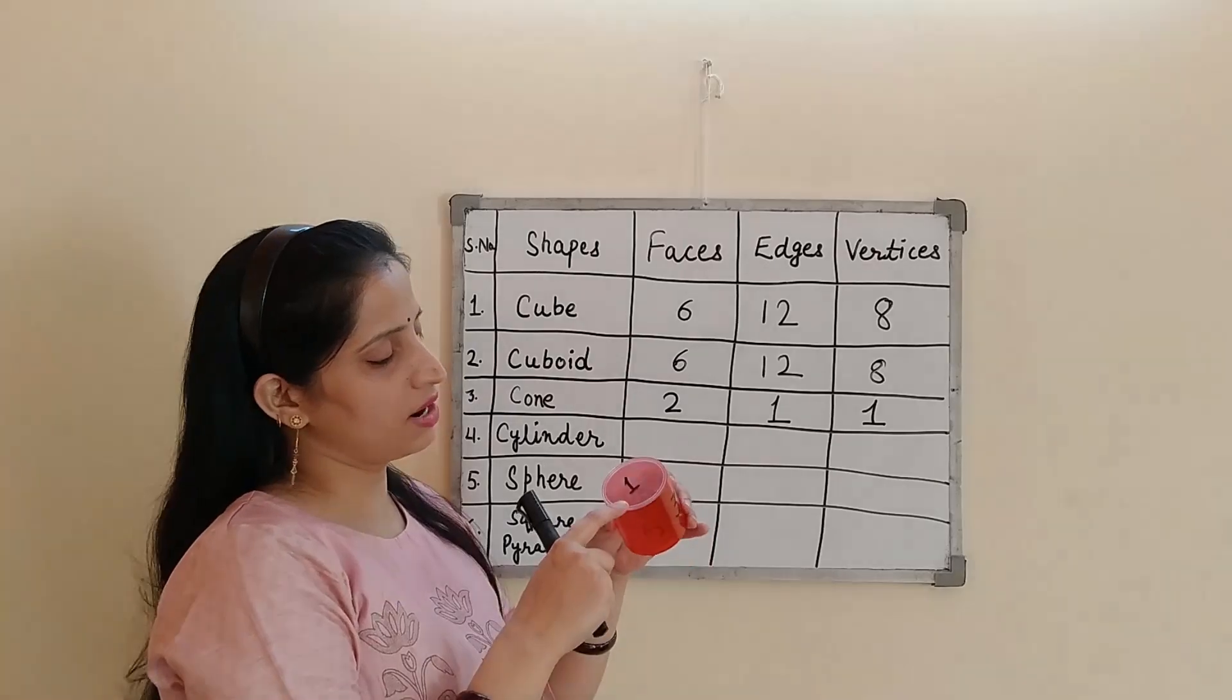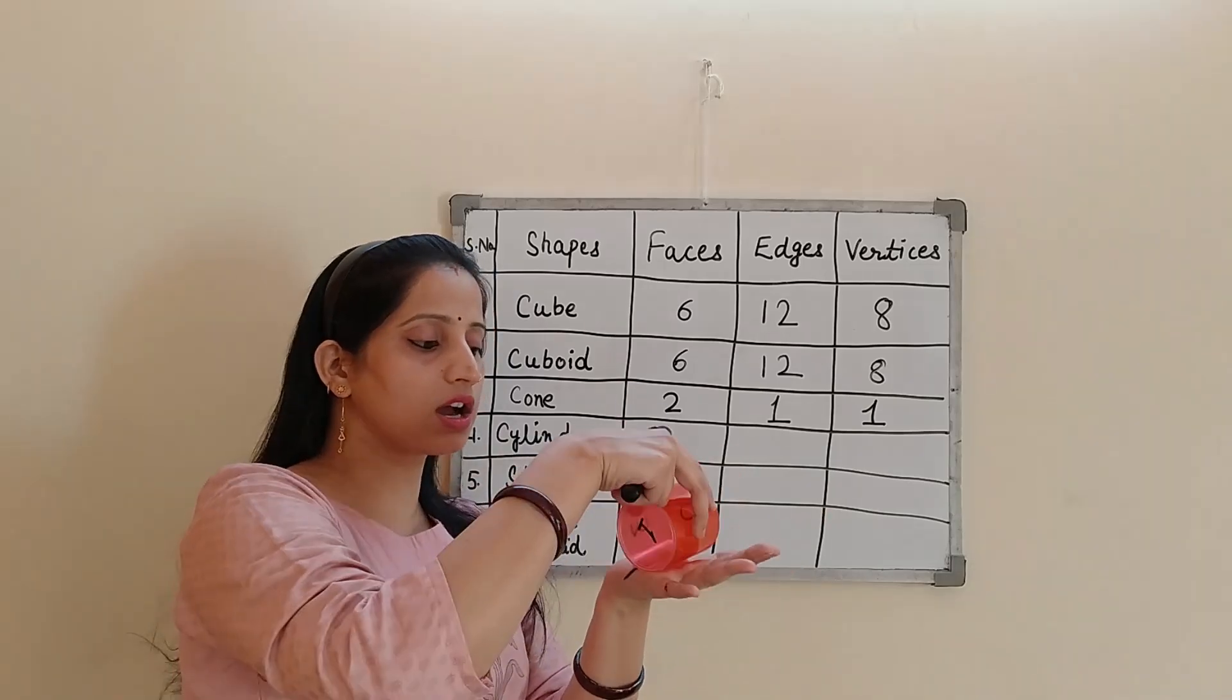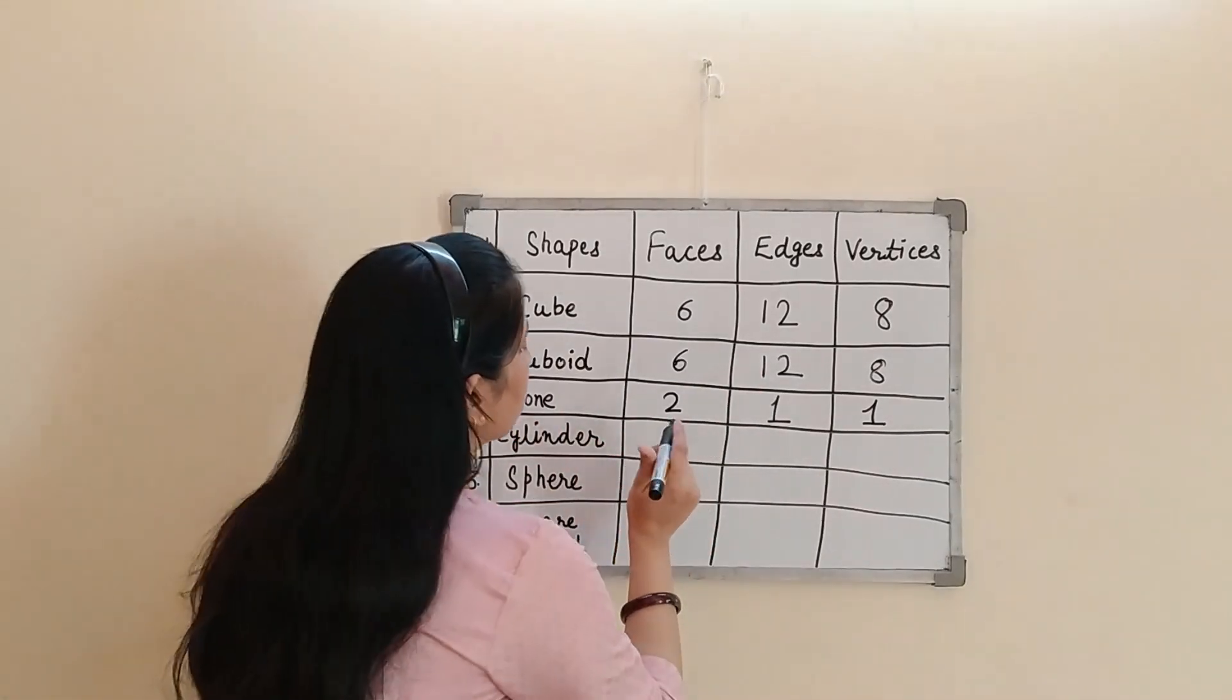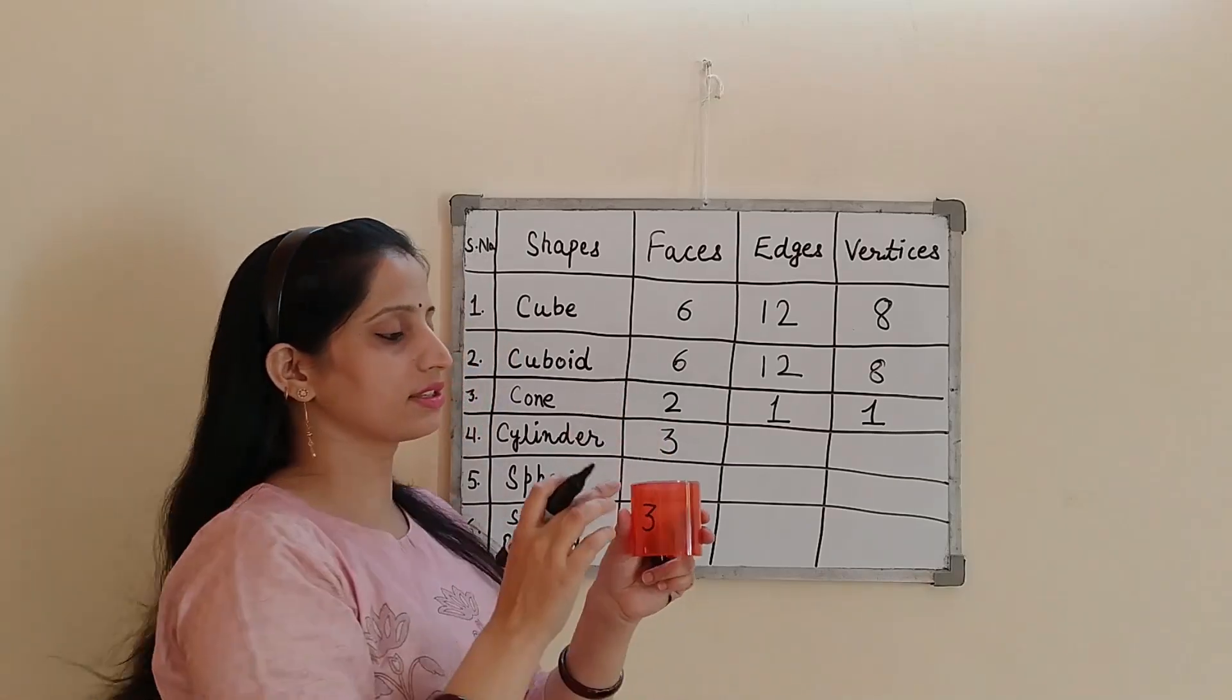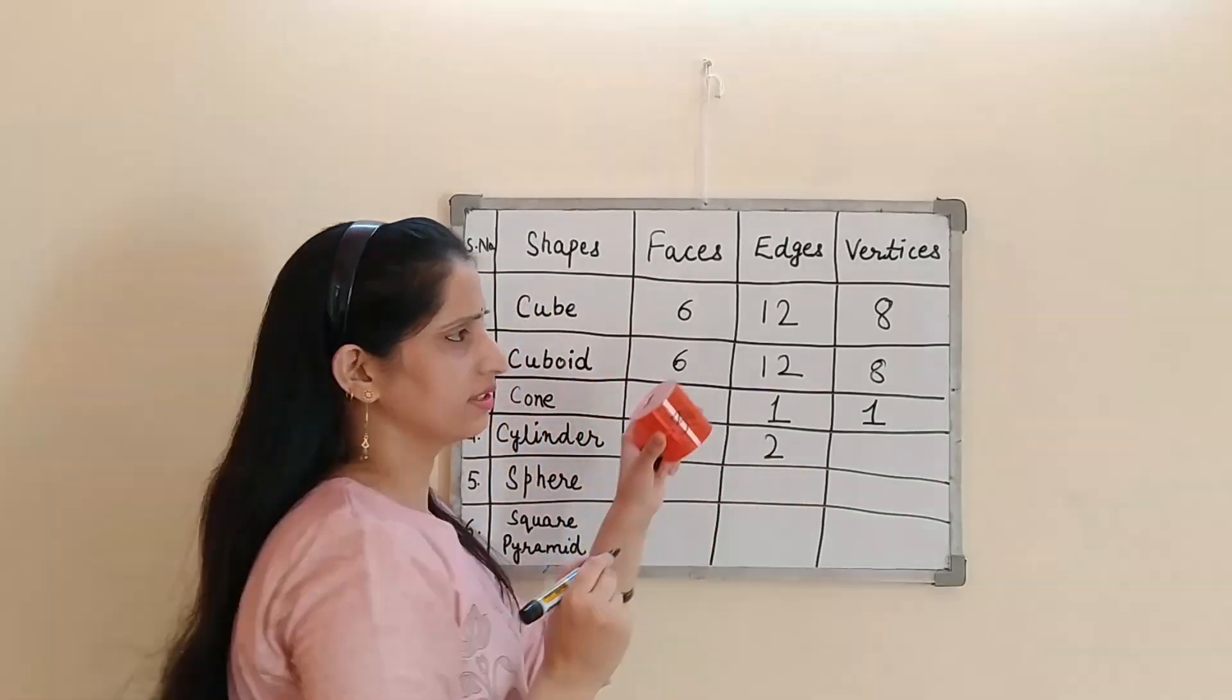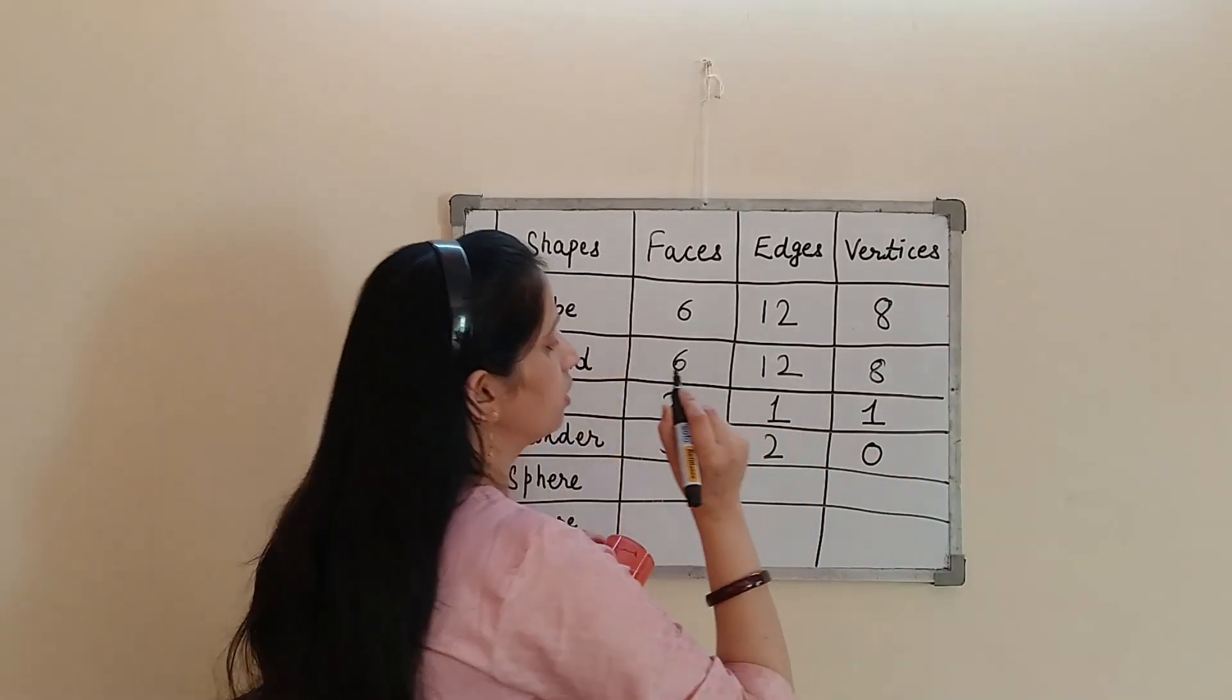So now we will start counting its faces. See, I have already marked the number of faces here. You can see, it has 2 flat faces and 1 curved face. So let's count 1, 2, and 3. So it is having 3 faces. Now come to the edges. How many edges? 1 and 2. 2 edges and is there any vertices in this? No. There is no vertex in cylinder. Number of vertex will be 0.